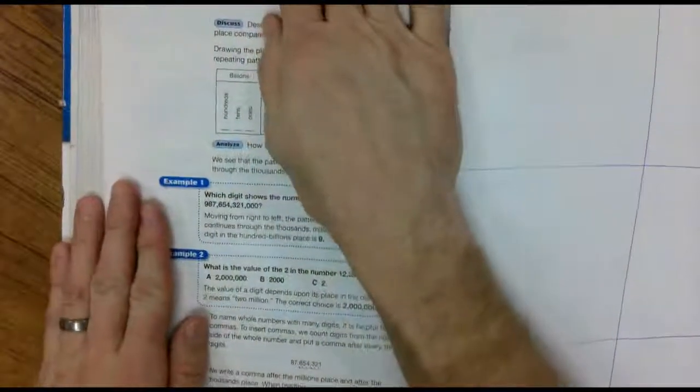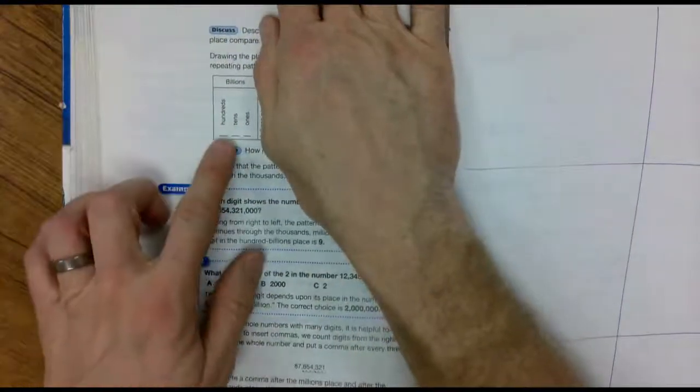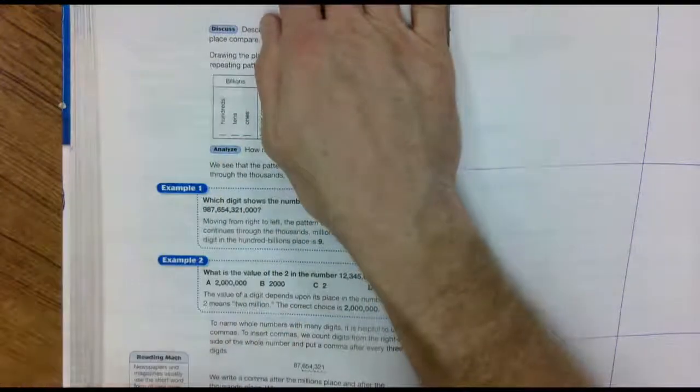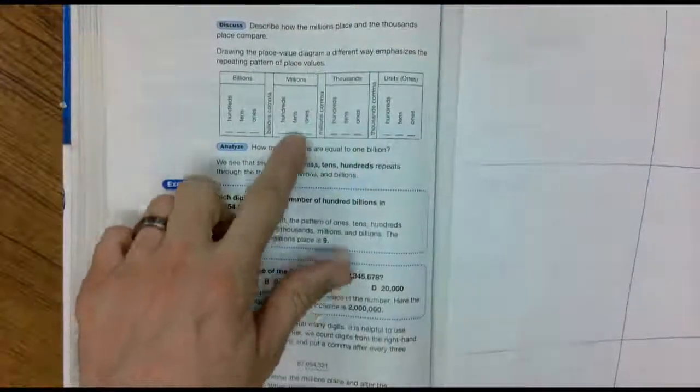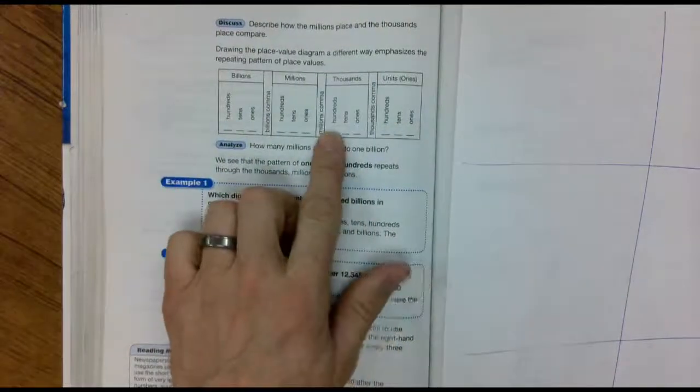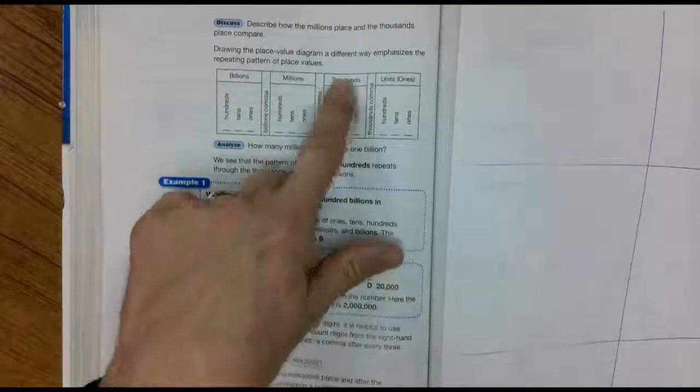I'm going to chunk my numbers like we normally used to chunk them. 123 billion, 456 million, 679 thousand.